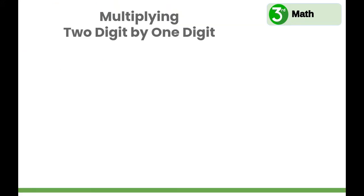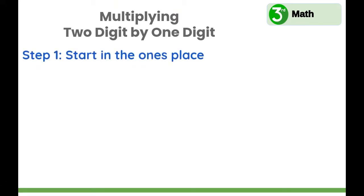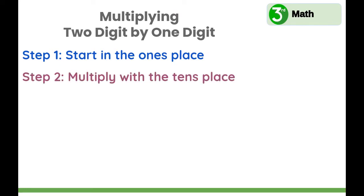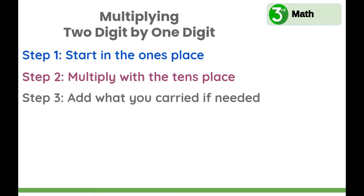Let's review multiplying two-digit by one-digit numbers. When you set up your equation, make sure the ones place is lined up. Then we'll start in the ones place and multiply those numbers. If there's a number in the tens place to carry over, you carry it to the tens. Then multiply with the tens place and add what you carried if needed. Happy multiplying!